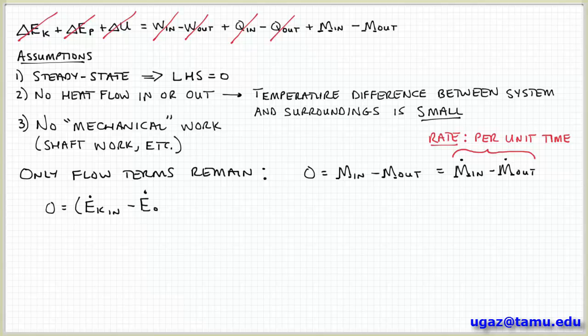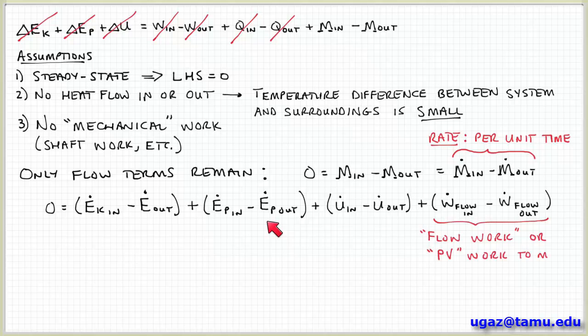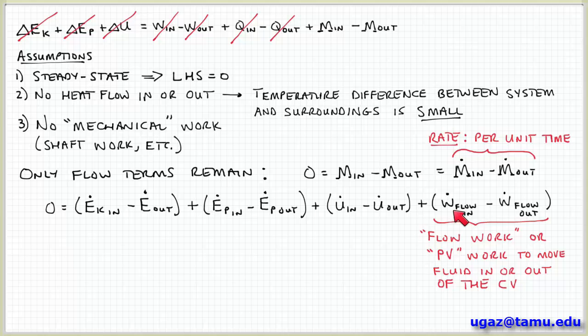Okay, so now let's expand or think about what could be involved in these mass flow terms. So what kind of energy can be carried into or out of the control volume by the mass flow? We can have kinetic energy in minus kinetic energy out by the flow. We can have potential energy carried into or out of the control volume by flow. And we can have internal energy carried into or out of the control volume by flow. And then we have a fourth term, this W dot. So what is this? This is the flow work.